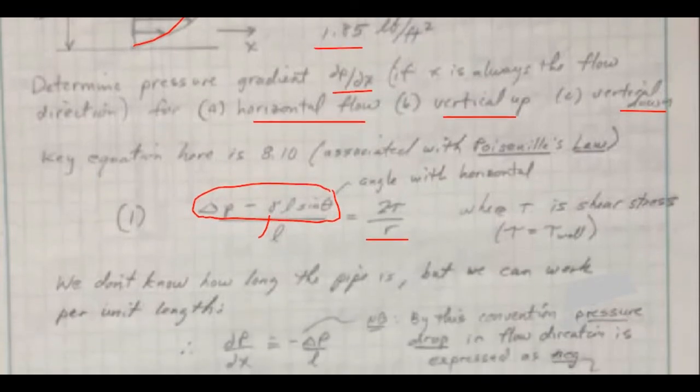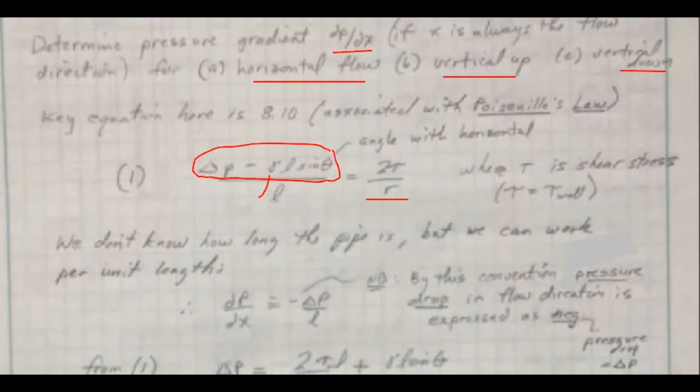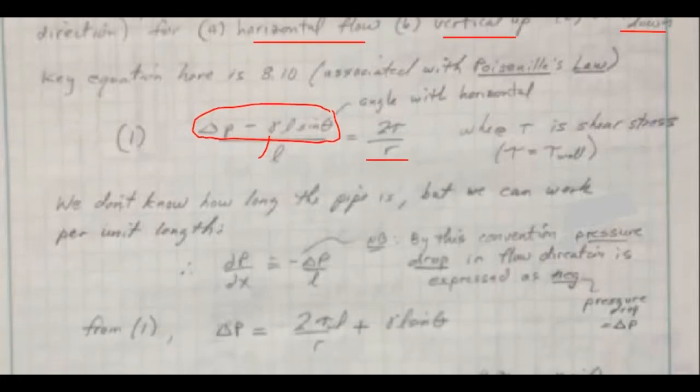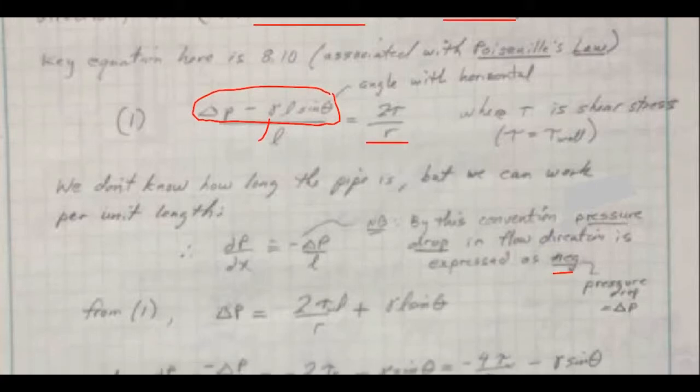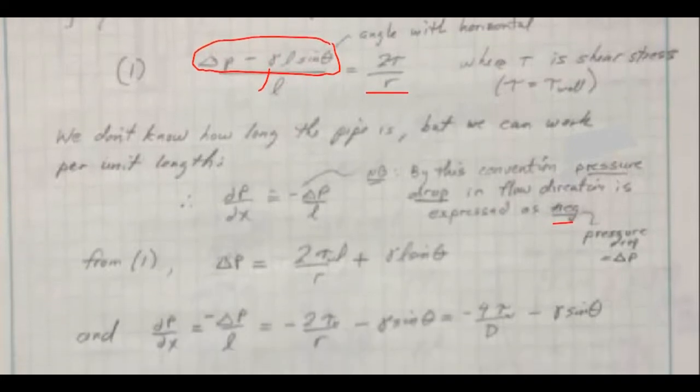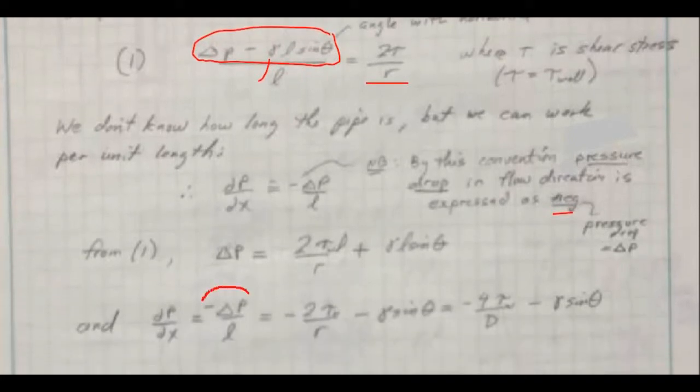So we don't know how long the pipe is, but we can work per unit length. We can say the pressure gradient is approximately negative delta p over L using the convention that pressure drop in flow direction is negative. That's just where this negative comes from. And otherwise, it's just some algebra where we rearrange our terms and try to get this pressure drop expression by itself here.